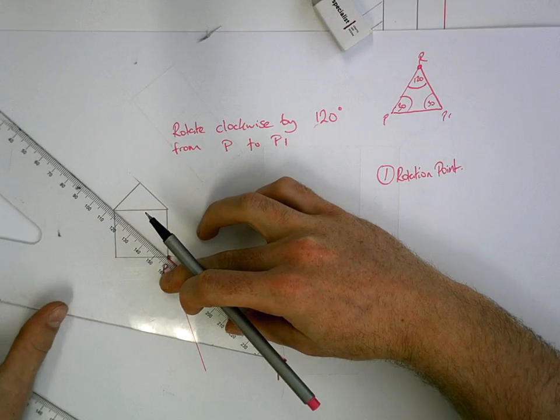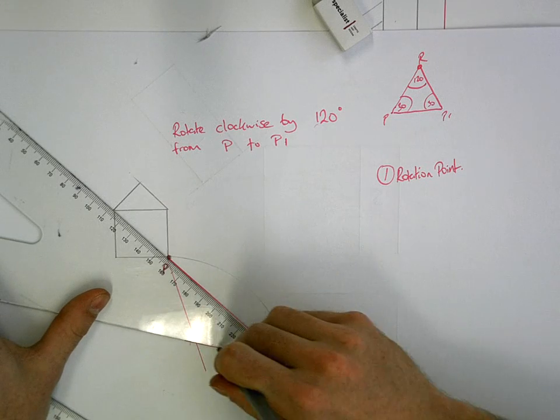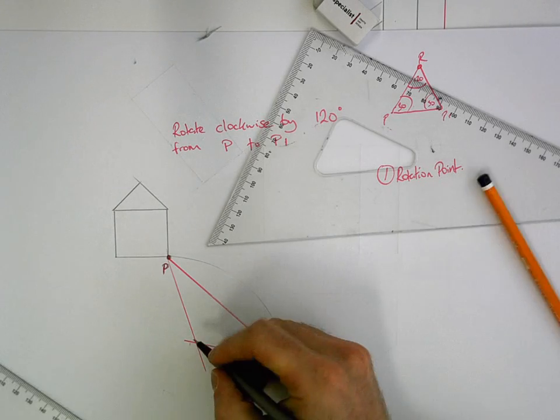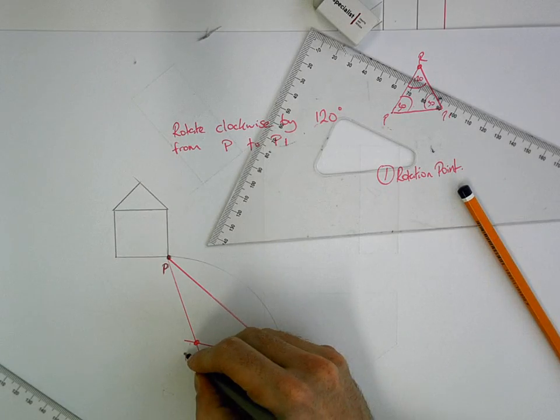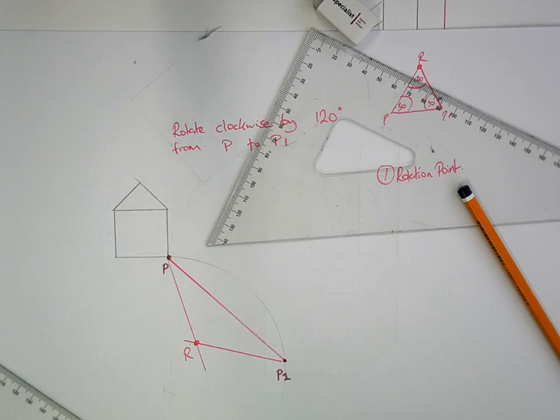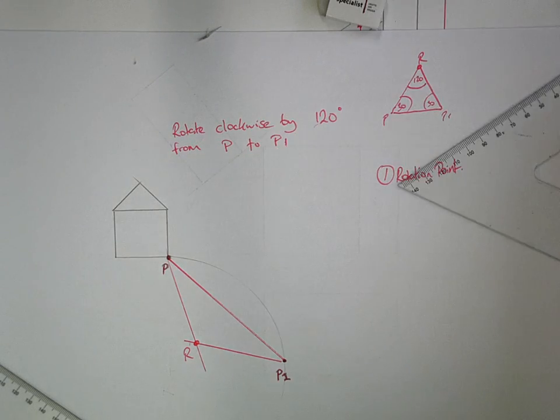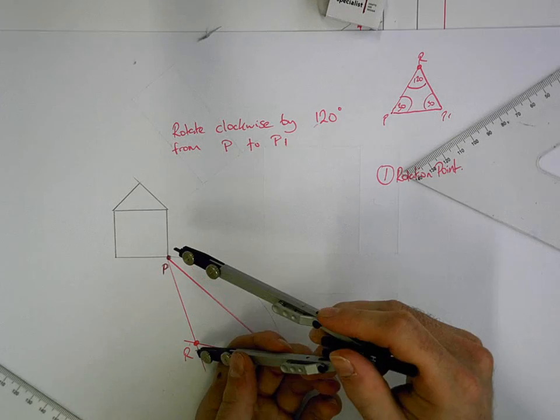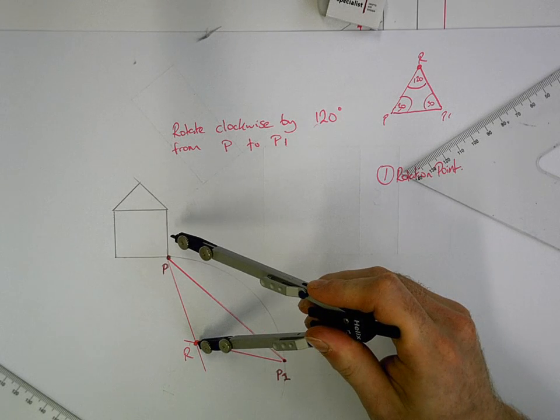30 degrees in both directions. And where they cross over, that's point R. So that's my rotation point. So the rotation point is vital. That's where the compass is going to go when I'm swinging everything around. Okay? We do this in stages.